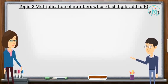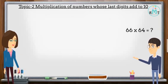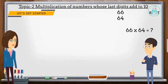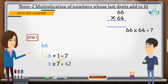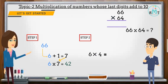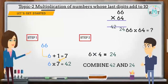A student asks: what will be the answer if we multiply 66 with 64? Let's solve this problem step by step. Step 1: in 66, after 6 comes 7, so we multiply 6 with 7 and put the answer 42 on the left side. Step 2: we multiply the rightmost digits 6 and 4, so the answer is 24, and put it on the right side. Combining 42 and 24, the final answer is 4224.